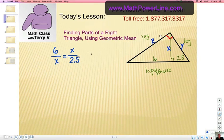Now when you solve this proportion, you're going to cross multiply, which is X times X and 6 times 2.5, which is 15. Okay? Now obviously what we want to do is take the square root of each side, so the square root of X squared and the square root of 15.